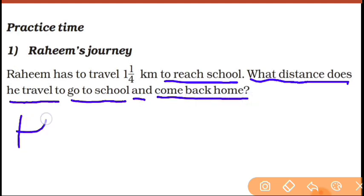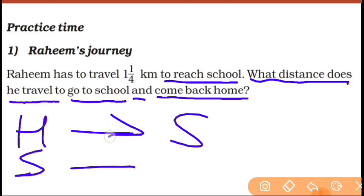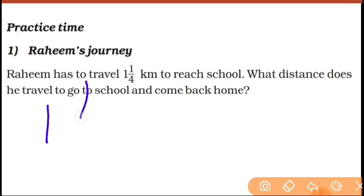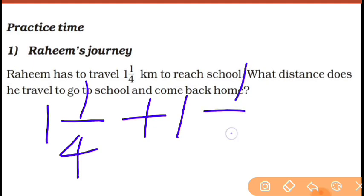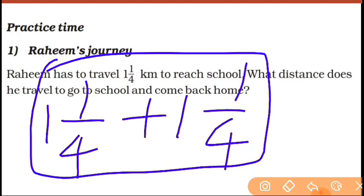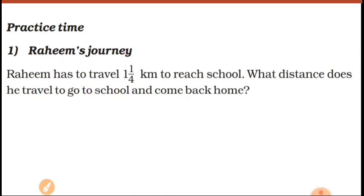So it's home to school, then school to home. Total distance he has to travel. You can do plus — you have two mixed fractions and you will do their sum.